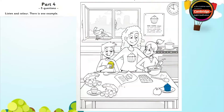Two. Can you see the cake on the poster? On the poster on the wall? Yes, I can. Good. Colour that cake purple, please. OK.